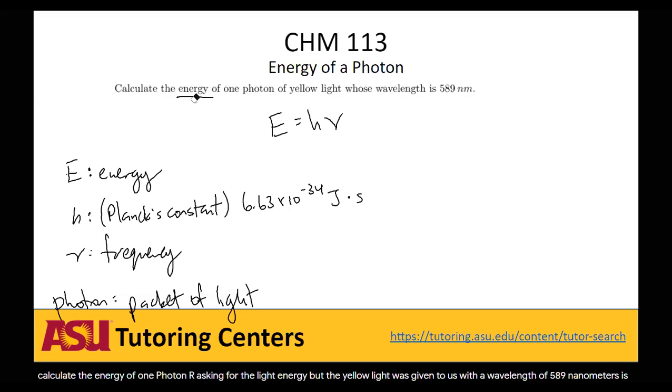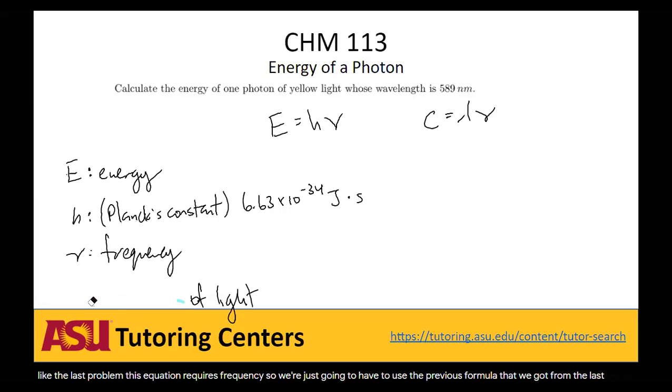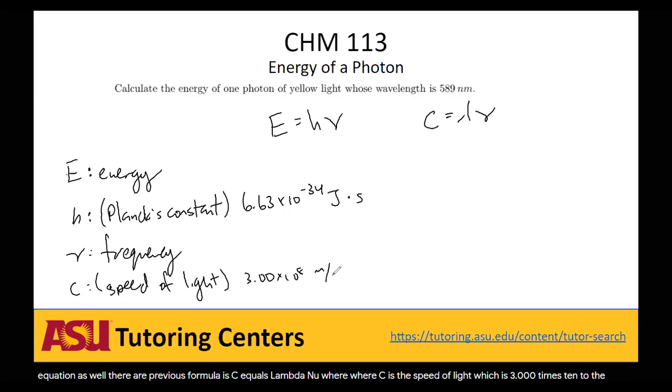So we're just going to have to use the previous formula that we got from the last equation as well. Remember our previous formula is c equals lambda nu, where c is the speed of light, which is 3.00 times 10 to the eighth meters per second, and lambda is wavelength.